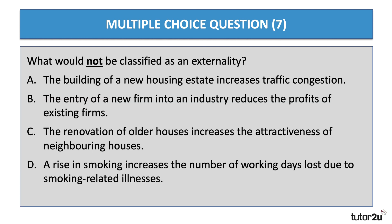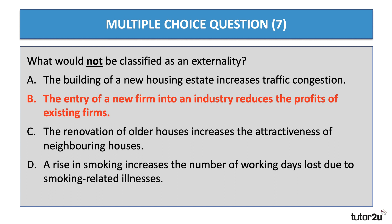Question seven: what would NOT be classified as an externality? Not everything is an externality — it needs to happen outside the market transaction between two agents. The right answer is B — the entry of a new firm increases the profits of existing firms. All the other options are externalities: attractiveness of neighbouring houses, traffic congestion, and smoking across the economy. The entry of a new firm is simply inside the market transaction, so it is not an externality.